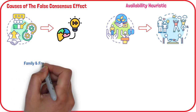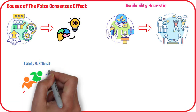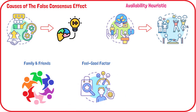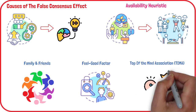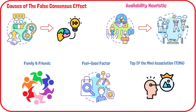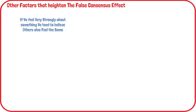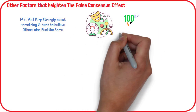Researchers suggest that there are three main causes of the false consensus effect. First, our family and friends — the people we interact with most — are more likely to be similar to us and share many of the same beliefs and behaviors. Second, the feel-good factor: we feel better and more respected believing that other people think and act like us. Third, our own attitudes and beliefs are most readily available to us, so we are more likely to notice when other people share similar attitudes. If we feel very strongly about something or consider it really important or feel very confident in our point of view, the degree of false consensus tends to be stronger.